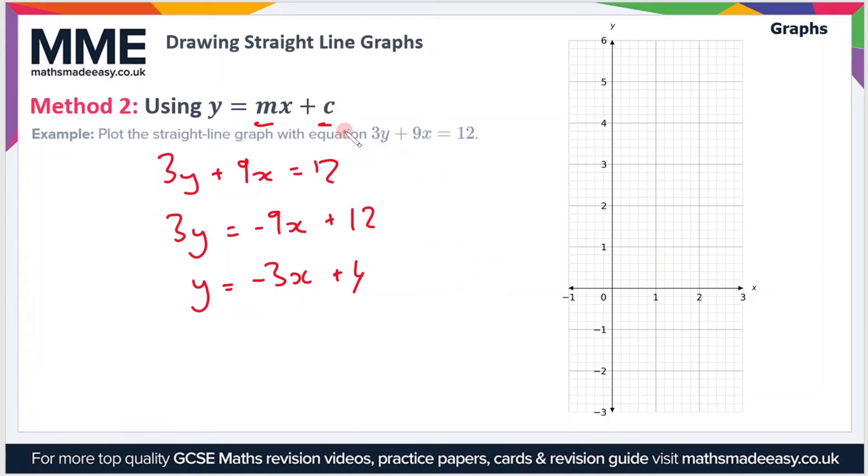We'll start with the value for c, that's the y-intercept, the point at which the graph crosses the y-axis. Our value for c is 4, so c equals plus 4, which means our graph is going to cross the y-axis at plus 4.